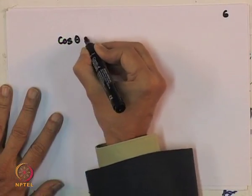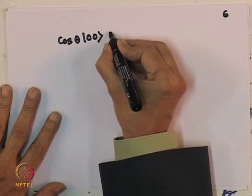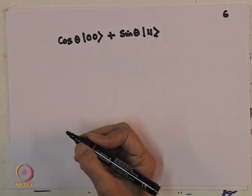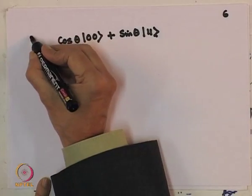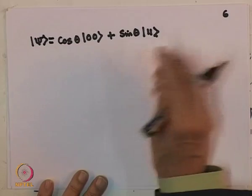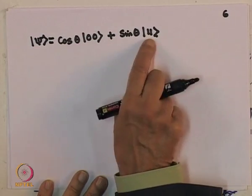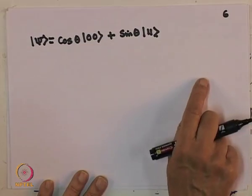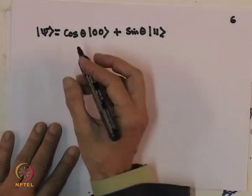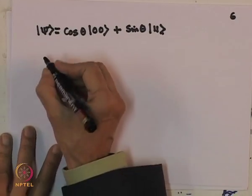Now let me give you an illustration of that inequality I talked about. Consider a state which is cos θ |0⟩|0⟩ plus sin θ |1⟩|1⟩. Since this is a pure state, I can immediately calculate what is the entropy and find that the entropy is equal to 0.